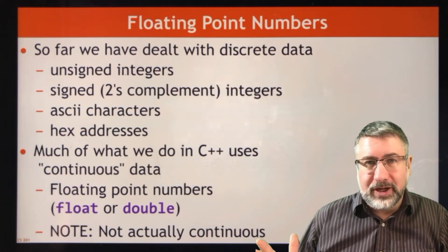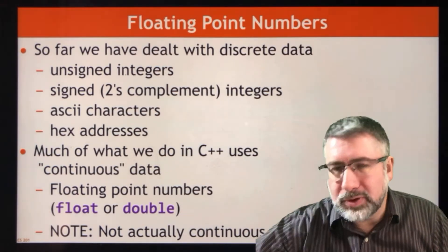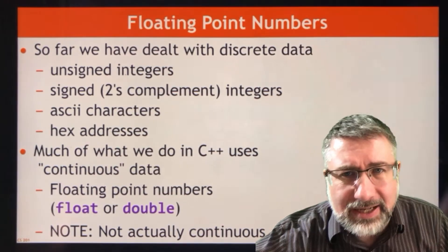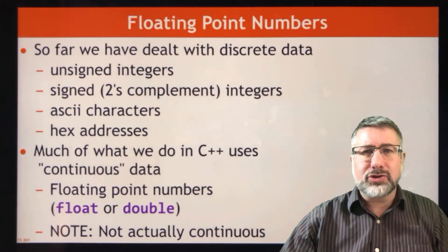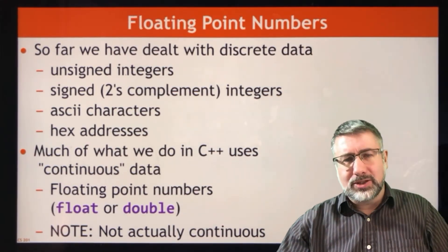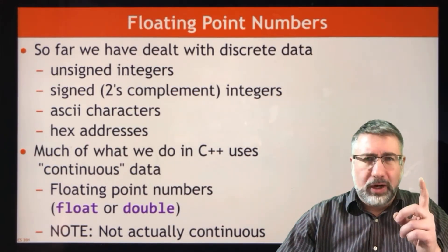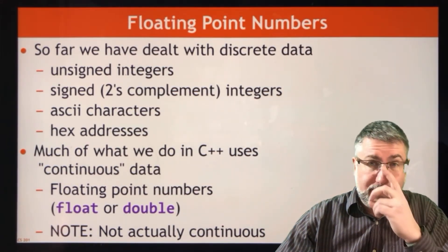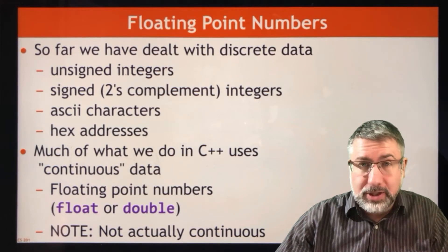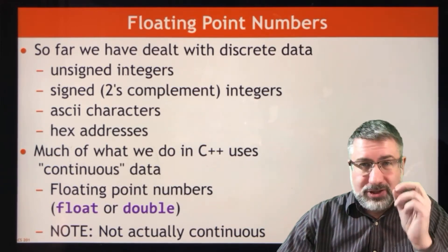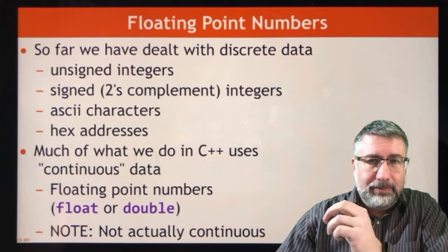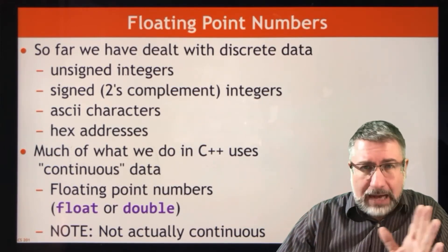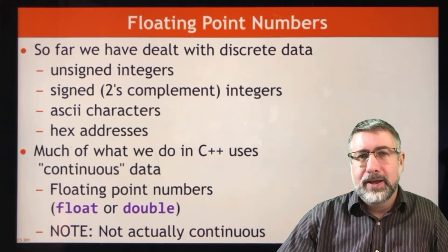So far we've dealt with what we call discrete data. Discrete data means that there's a one and then a two and there's nothing in between. Rational numbers are discrete — there are individual numbers but there are gaps between them.